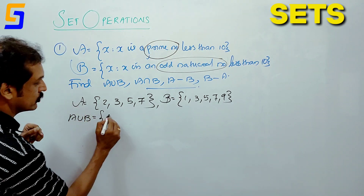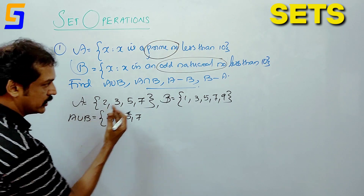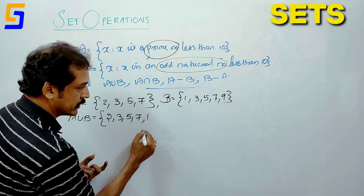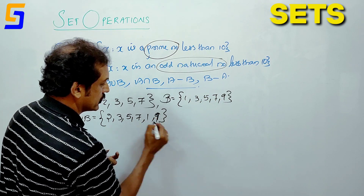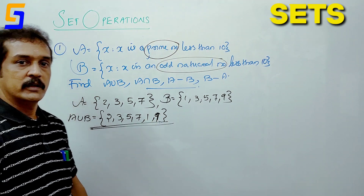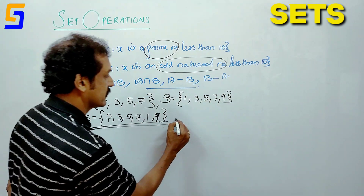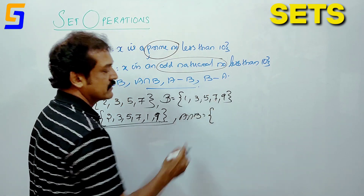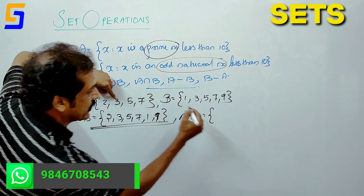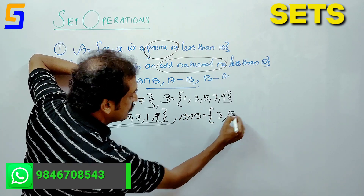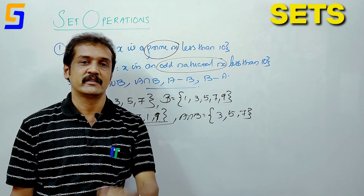A union B: A is {2, 3, 5, 7} and B is {1, 3, 5, 7, 9}. Combining both sets, the result is A union B. Then A intersection B — the common elements between A and B are 3, 5, and 7. So A intersection B equals {3, 5, 7}.